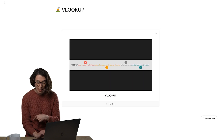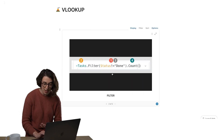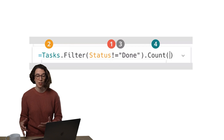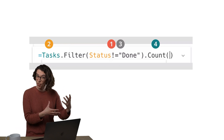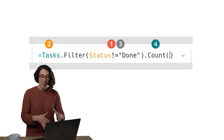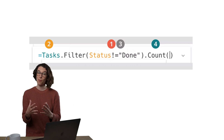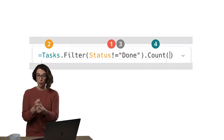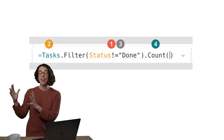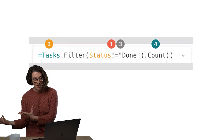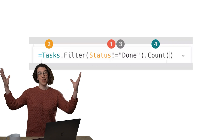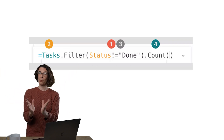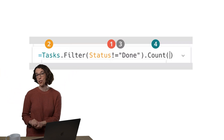When we're dealing with the Coda filter formula, we flip this around a little bit. We start with the location — what table do I want to look up from? That's our range. Then we go into the value that I'm interested in and the match I'm looking for, all in one phrase, and then what do we want to do with it.